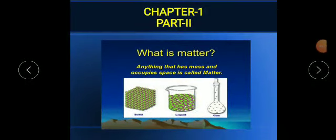Good morning children, hope you all are safe and good. So this is chapter number part 2. In my last video I explained what is matter, what are the kinetic theory of matter, and how we classify matter based on their physical state which is solid, liquid and gas. I also explained matter on the basis of appearance — it is of two types: homogeneous and heterogeneous.